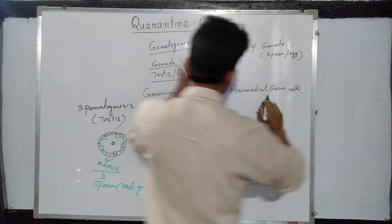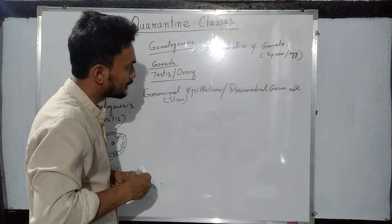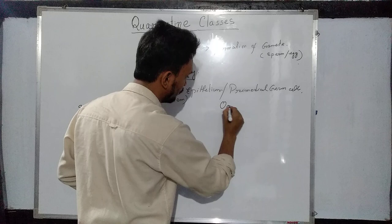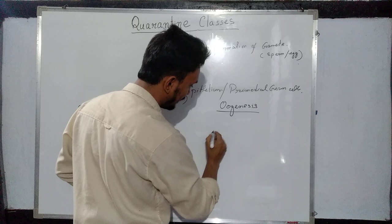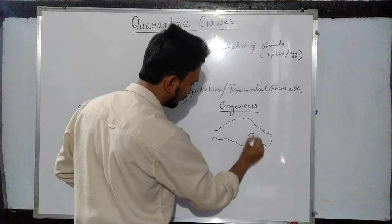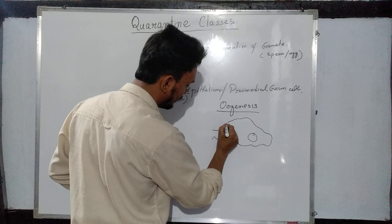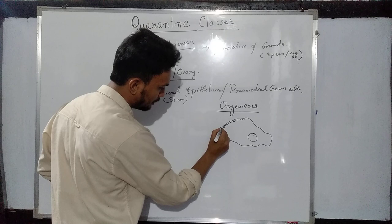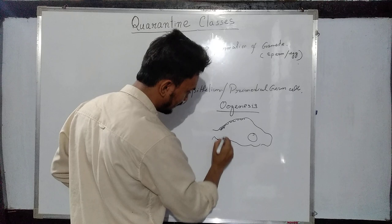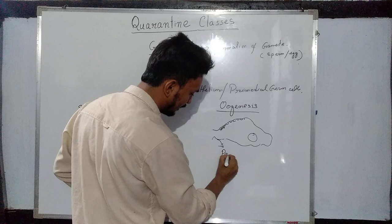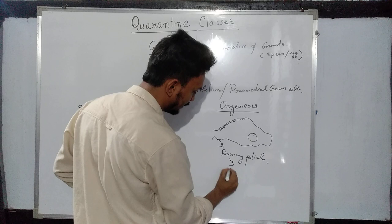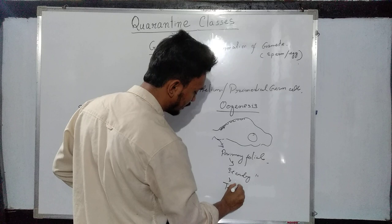Similarly, if we consider the wall of the ovary, the process of formation of the female gamete is known as oogenesis. If you remember the structure of the ovary — that is the Graafian follicle — there are also some germinal epithelium cells or primordial germ cells. These cells will give rise to the ovum. They will develop into firstly a primary follicle, then a secondary follicle.